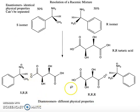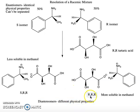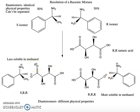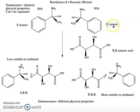So these two salts, these two diastereomers, have different physical properties. In particular, we can look at their solubility in methanol. The S,R,R diastereomer is less soluble in methanol, and the R,R,R diastereomer is more soluble in methanol. This means that if we do a recrystallization of these two salts, most of our crystals — a higher percentage — are going to be the less soluble S,R,R diastereomer, and we will have effectively enriched our product in the less soluble salt. By this means, we'll be able to separate the S isomer from the R isomer.